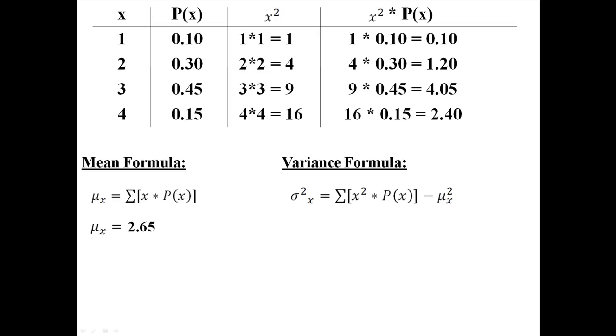Now what we need to do is add those together. And if we add all those together, we have 7.75, which is the first part of that formula. That sum of x squared times probability, that is 7.75.